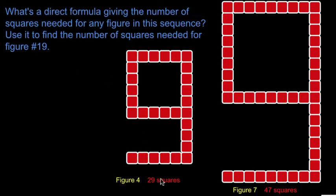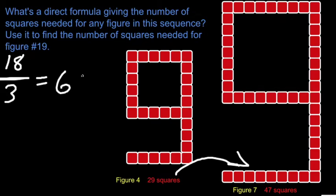Going from start to finish, we have figure 4, 5, 6, 7. We're taking three steps. And going from figure 4 to figure 7, I'm increasing by 18 squares. That means that we're counting 6 extra squares per figure.